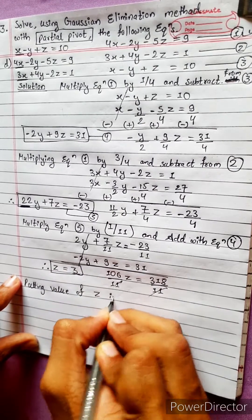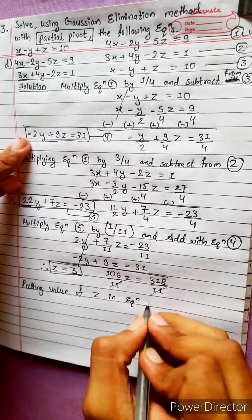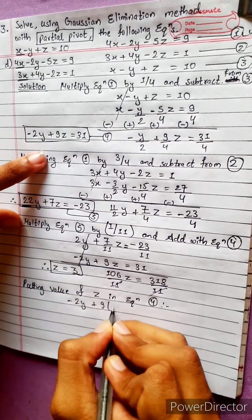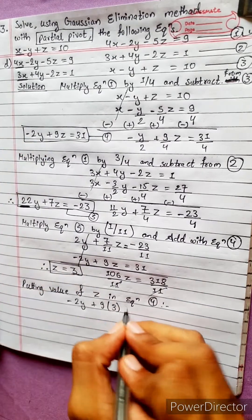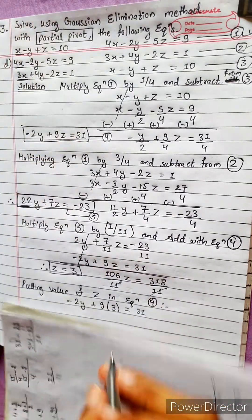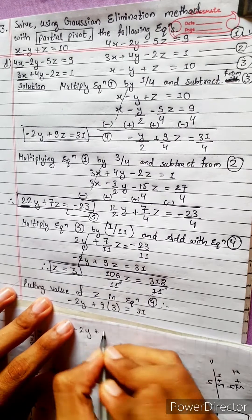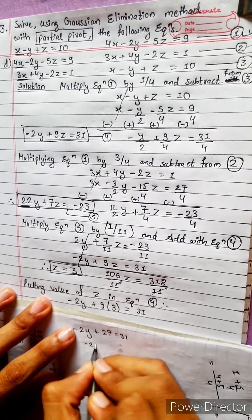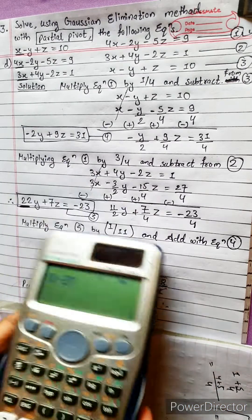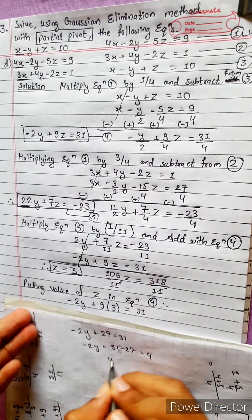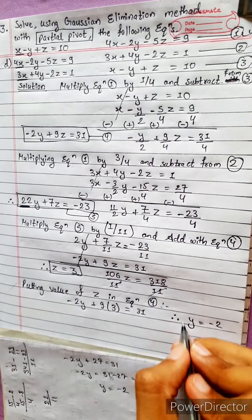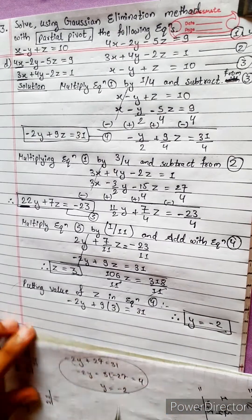Substituting z equals 3 into Equation 4, which is easier: minus 2y plus 9 times 3 equals 31. So minus 2y plus 27 equals 31, which gives 2y equals 31 minus 27 equals 4, and therefore y equals minus 2.